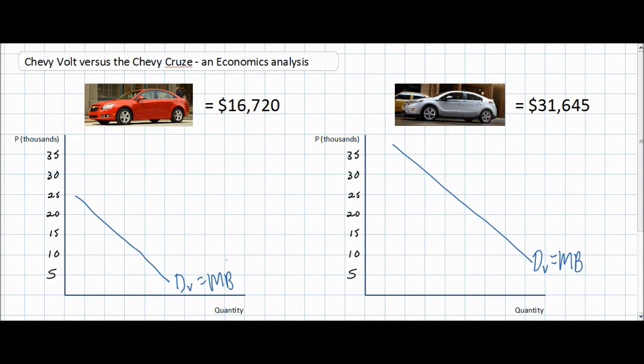Now let's consider the rationale for why demand for Chevy Cruzes is lower than that for Chevy Volts. What's the difference between these two cars? Of course, the main difference is that the Chevy Volt is a plug-in hybrid. This means that people who drive Chevy Volts have to fill their tanks with gas less frequently than people who drive petrol cars, such as the Chevy Cruze. The Chevy Volt, therefore, has additional benefits that are greater than for those who drive the Chevy Cruze.